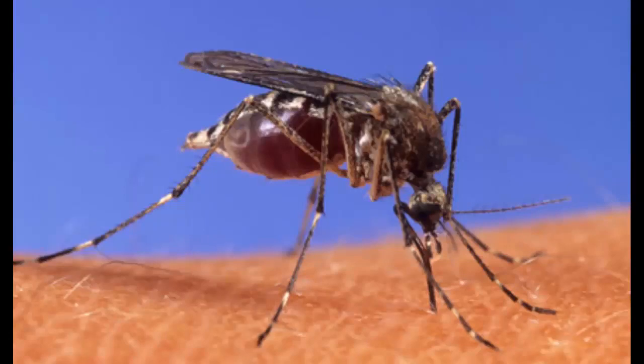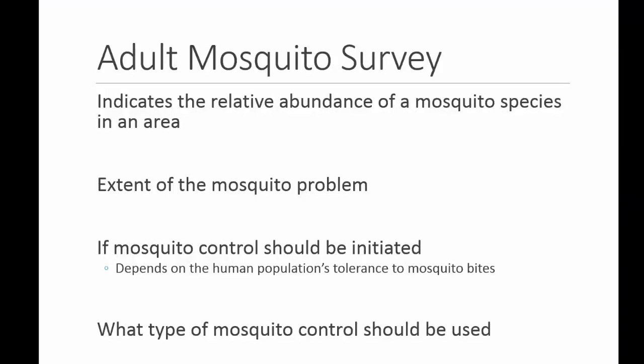Adult mosquito surveillance is a very important part of any mosquito program. Adult surveillance will provide information on the effectiveness of the larvicide program and of the potential effectiveness of a spraying program. However, the presence of some adult mosquitoes does not mean that the efforts are not working. No program will be successful in totally eradicating mosquitoes. Adult mosquito survey indicates the relative abundance of the species, the extent of the mosquito problem, if controls should be initiated, and what type of mosquito control should be used. The equipment needed to collect adult mosquitoes is generally more complicated and expensive than what we've seen so far for collecting larvae.